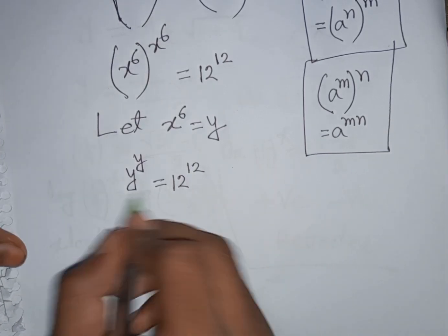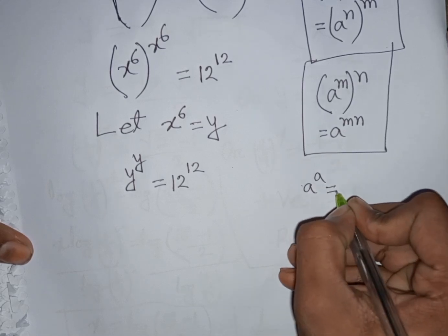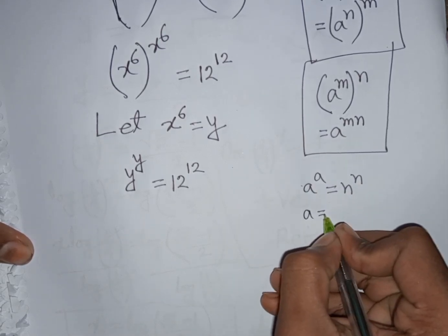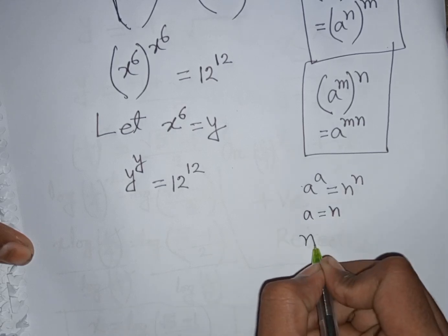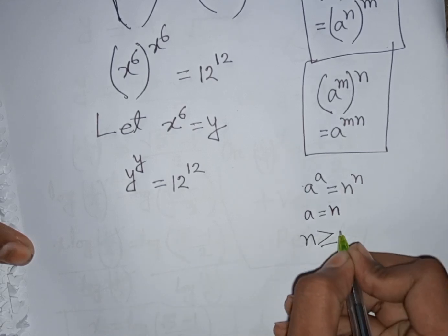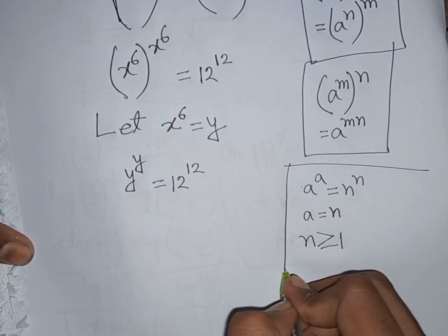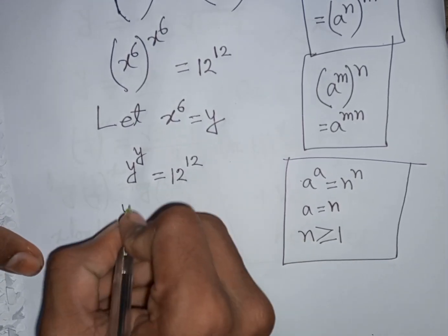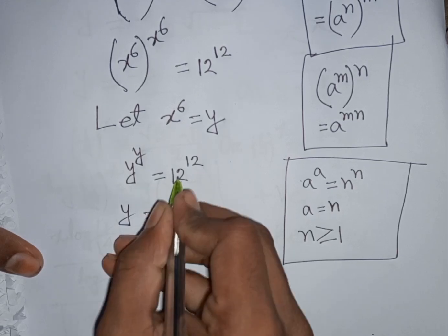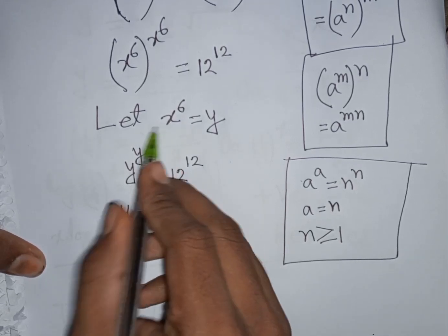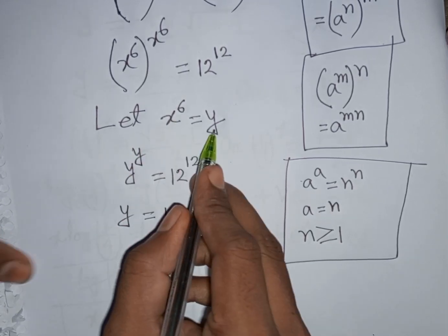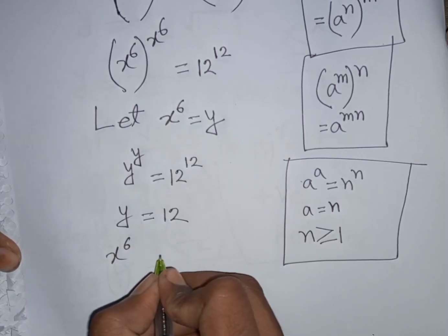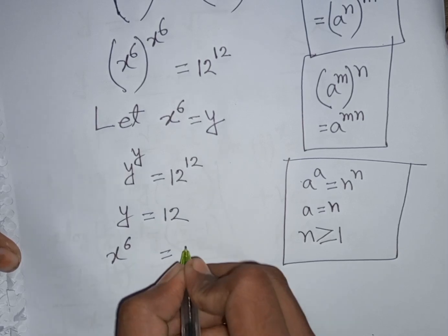Applying the rule that if a^a = n^n then a = n (for n ≥ 1), we compare y^y = 12^12 and conclude y = 12. Since x^6 was substituted by y, we have x^6 = 12.